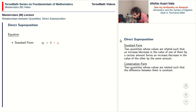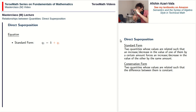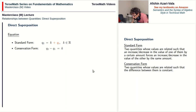A second formulation for direct superposition, known as the conservation form, states that the values of the two quantities are related such that the difference between them is constant. That makes sense because if two quantities both increase or decrease by the same amount, then the difference between them has to be constant. The conservation form has an equation that reads q2 minus q1 is equal to k — so the difference between the two values is constant, equal to k.